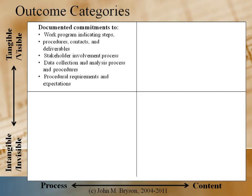When we've completed a strategic planning process — and even going through a strategic planning process — there are tangible, visible outcomes, including documented commitments to the work program indicating the steps, procedures, contacts, and deliverables; stakeholder involvement in the process; data collection, analysis process, and procedures; and procedural requirements and expectations. We're going to have written documentation and a lot of data.